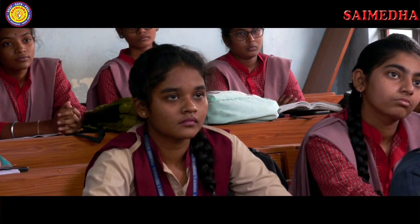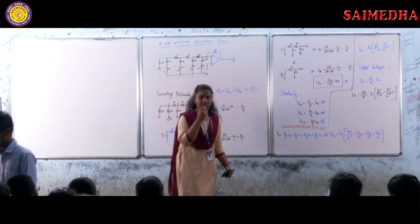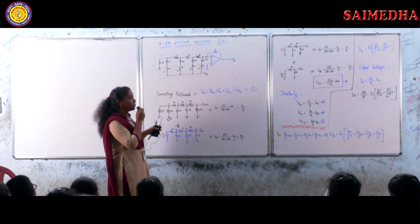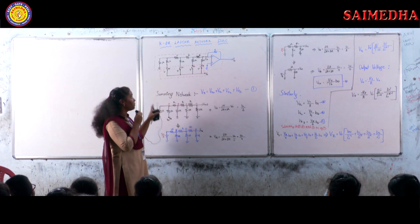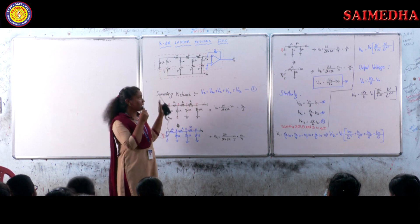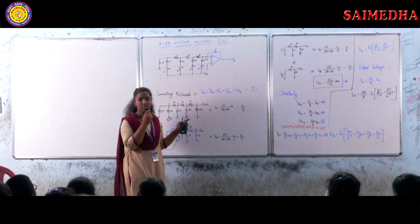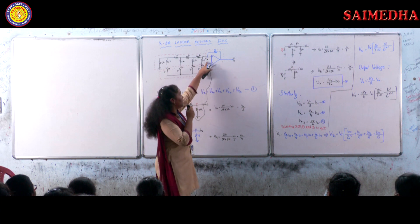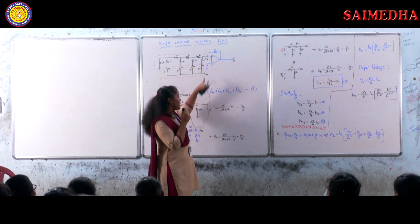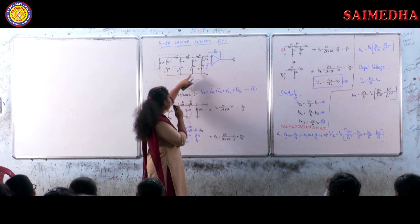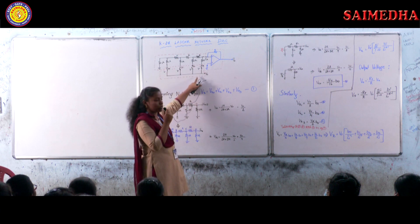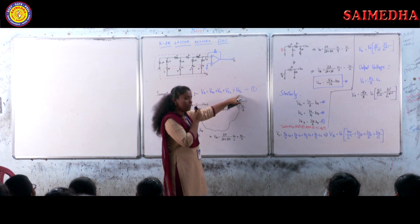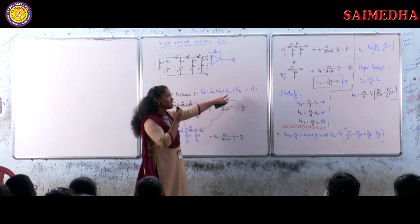Coming to the equation — we are using an electronic switch network and a summing network. The summing network has multiple voltage sources, so the multiple sources are added. We assume the summing network output voltage as Vx, and we have four voltage sources: Vx0, Vx1, Vx2, and Vx3. We are assuming this as equation 1.